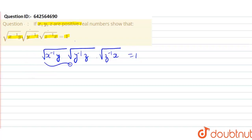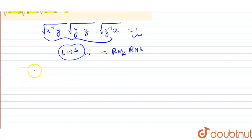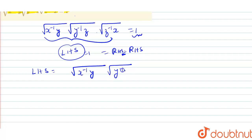We will call the left side LHS and the right side RHS. If we prove that the LHS equals 1, then it equals the RHS. So LHS equals under root of x raised to minus 1 into y, into under root of y raised to minus 1 into z, into under root of z raised to minus 1 into x. There is one property: root of a into root of b equals root of a·b.